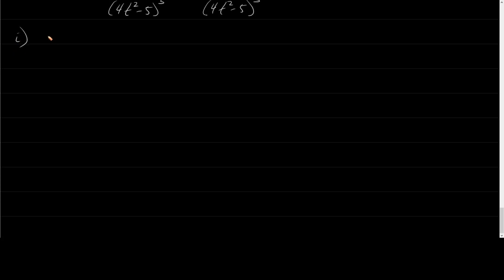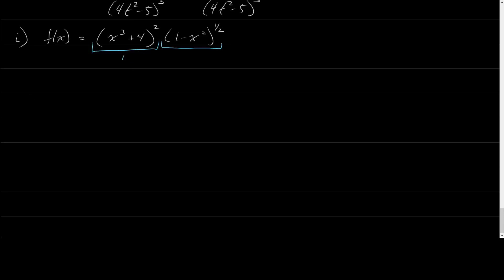Let's say I have f of x equal to x cubed plus 4 to the 2nd power, times 1 minus x squared to the 1 half power. Overall, I've got the product of two functions — this is u and this is v. So we need to use the product rule: the derivative with respect to x of u times v is u prime v plus v prime u. Let's figure out what u prime and v prime are.